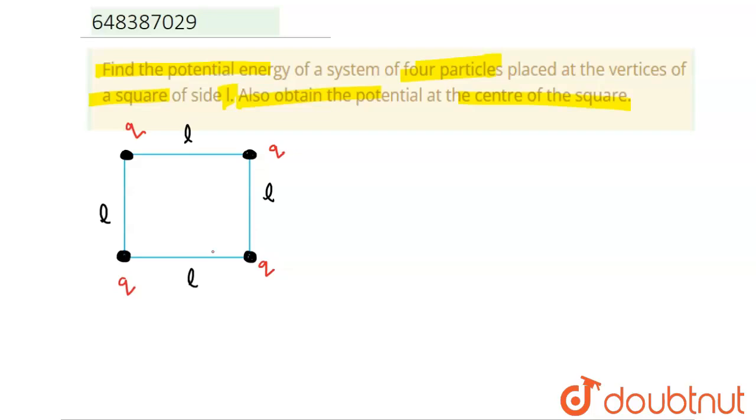work done in arranging this charges or arranging the system, that will be equal to the potential energy of the system. Let me just write down the statement so that you're going to understand. The net work done in arranging the system, this will be equal to potential energy of the system.